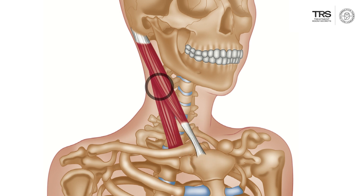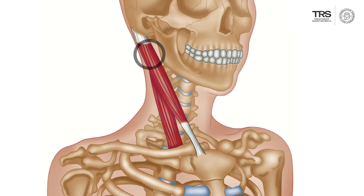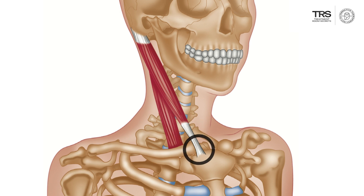The second division attaches down into the clavicle and runs underneath the sternal division. Trigger points can occur in both divisions. We'll look firstly at the sternal division, which is the more superficial.